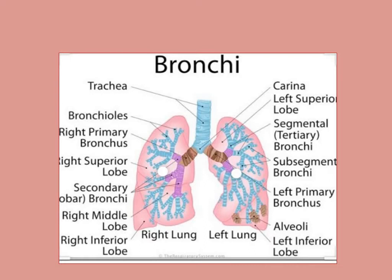After the tertiary bronchi, the next structures are the bronchioles — which are small — and further divide into alveoli, which are the air-sac-like structures.